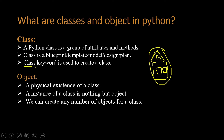An object is a physical existence of a class. First we create a blueprint — that is the class. When we make the actual house, that actual house is the object. So here, in paper we have the blueprint — that is the class — and when we build the house, that is the object.